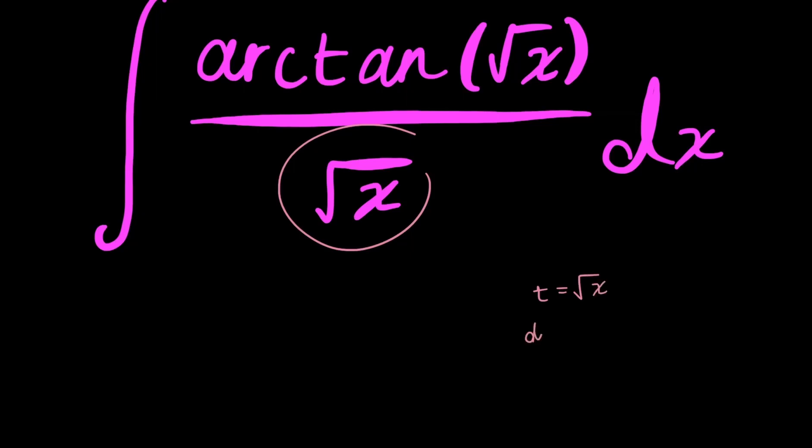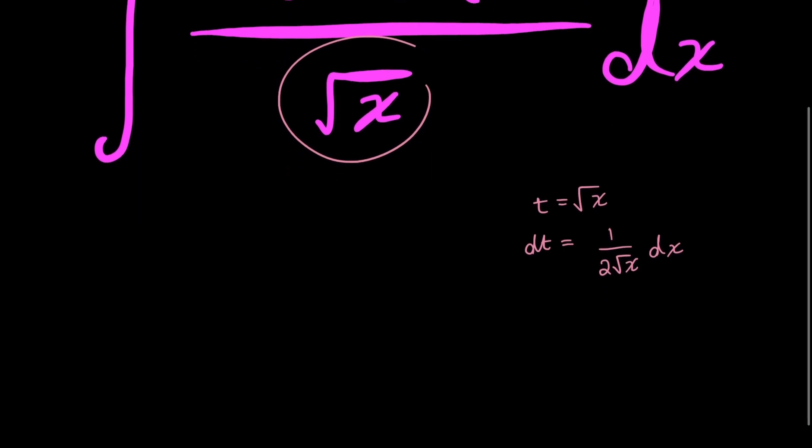And so the derivative of it is going to be 1 over 2 root x, because that's just the derivative of root x, right? And if I multiply by 2 on both sides, then I have 1 over root x dx is equal to 2 dt.